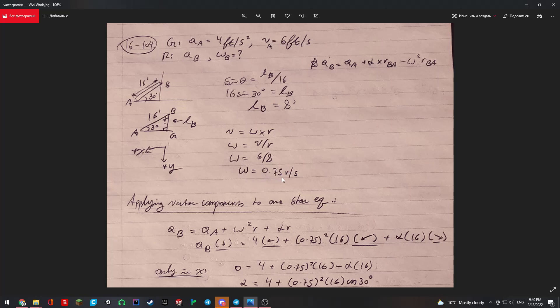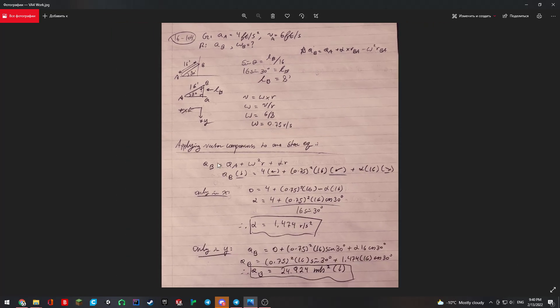Now we can apply the vector components to our star equation. We know that it becomes AB equals AA plus omega squared R plus alpha R.